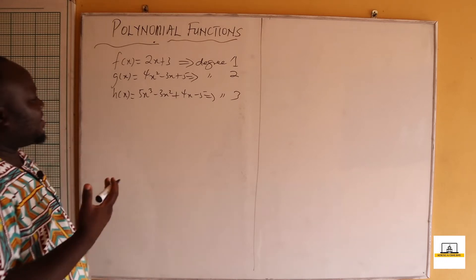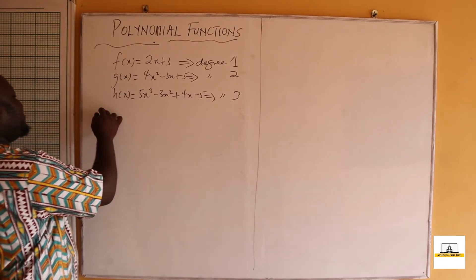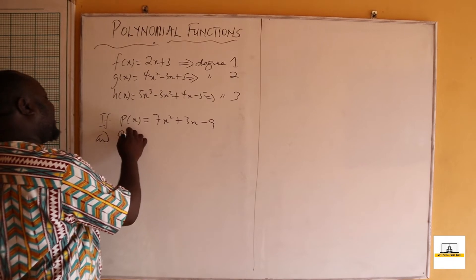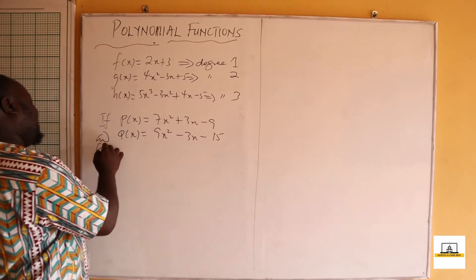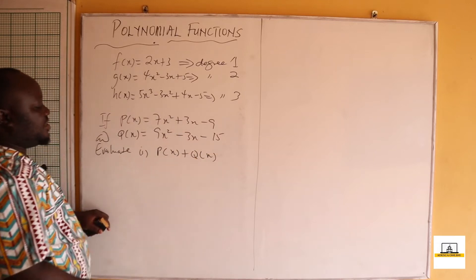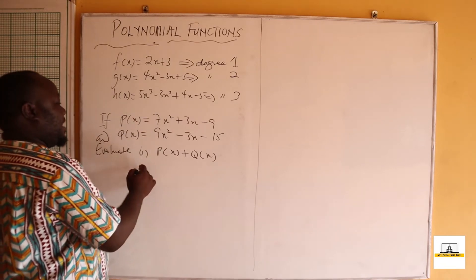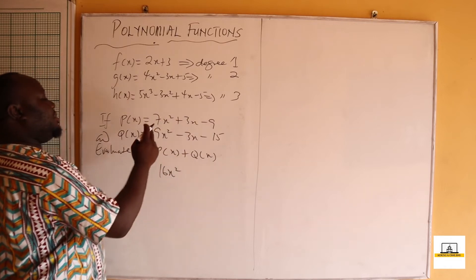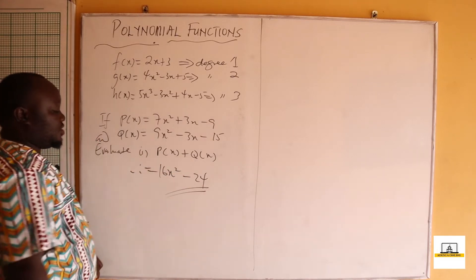We can add and subtract polynomials. If p(x) = 7x² + 3x - 9 and q(x) = 9x² - 3x - 15, then p(x) + q(x) means we add like terms: 7 + 9 = 16x², then 3 + (-3) = 0, and -9 + (-15) = -24. So p(x) + q(x) = 16x² - 24.